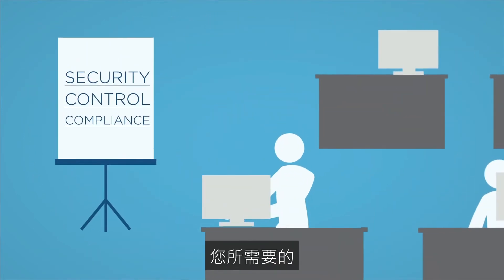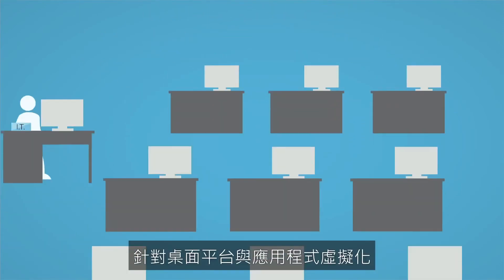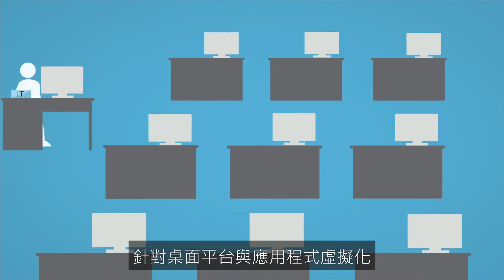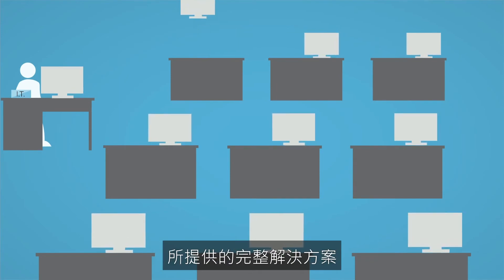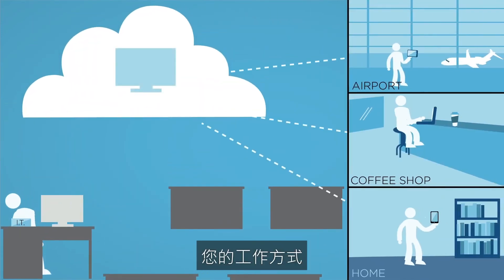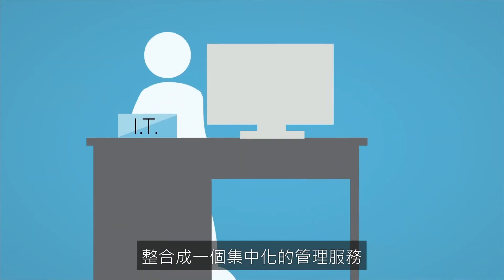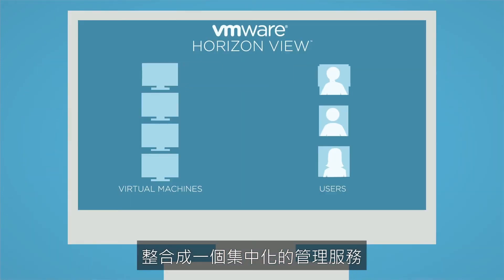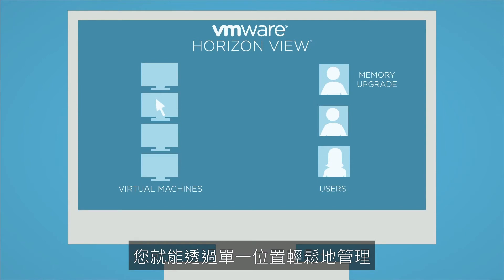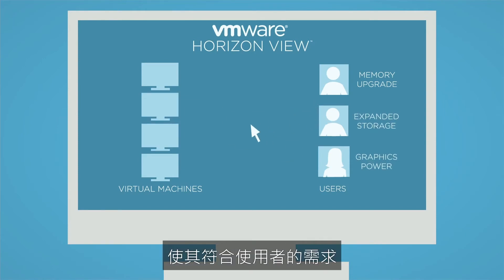The new solution that you need is right here with VMware Horizon View. Horizon View is a complete solution for desktop and application virtualization, and it will completely transform the way you work. By putting all of your organization's desktops into one centralized managed service, you have one place where you can easily manage and customize desktops to fit the needs of your users.